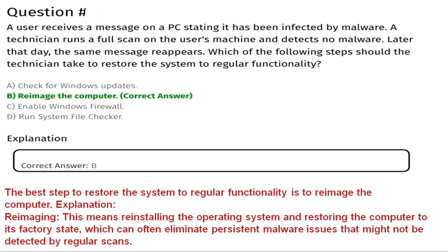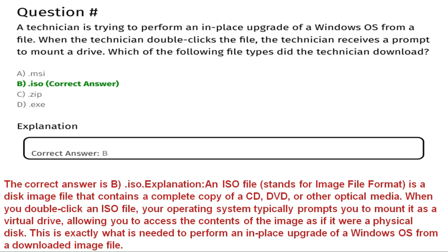Next question: A user receives a message on a PC stating it has been infected by malware. A technician runs a full scan and detects no malware, but later that day the same message reappears. Which of the following steps should the technician take? Option A is check for Windows updates, Option B is reimage the computer, Option C is enable Windows Firewall, Option D is run System File Checker. The correct answer is Option B, reimage the computer, as reimaging reinstalls the OS and restores the computer to its factory state, eliminating persistent malware that regular scans may not detect.